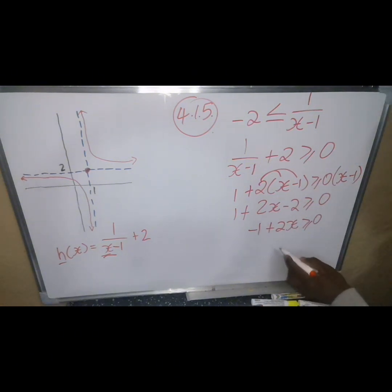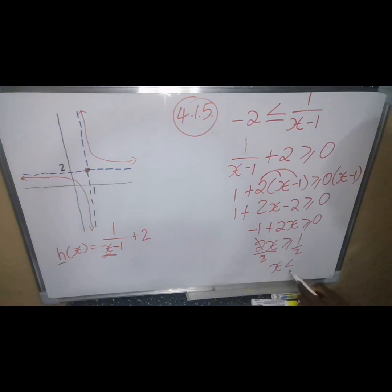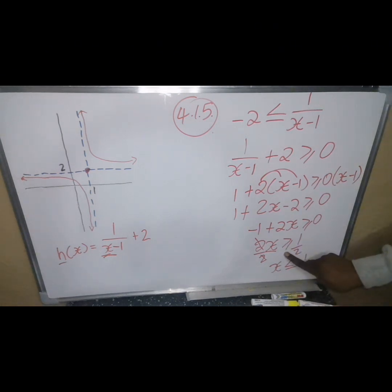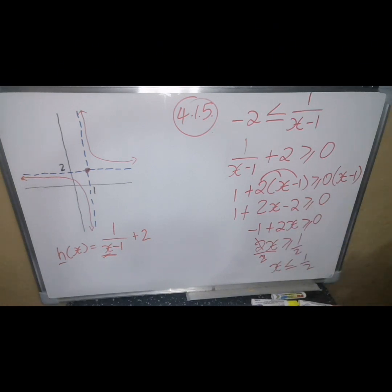Transposing negative 1 to the right: 2x ≥ 1. Dividing both sides by 2, and remembering to flip the inequality sign when dividing, we get x ≤ 1/2. But we must also exclude x = 1 (the vertical asymptote). So x ≤ 1/2 is the answer.